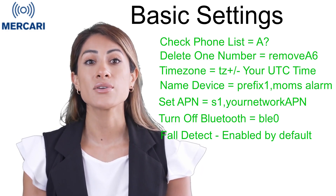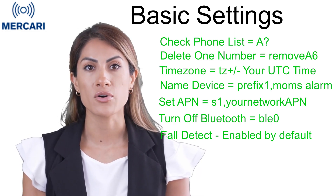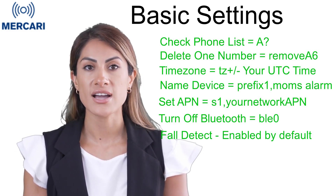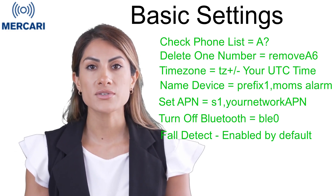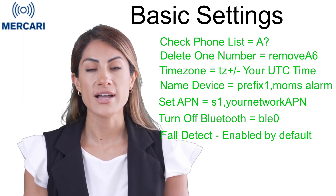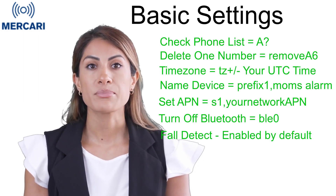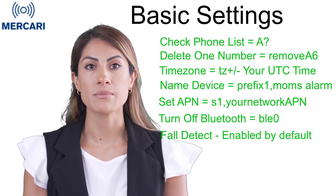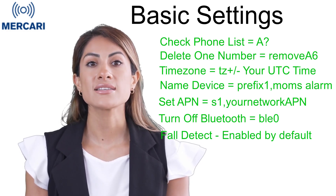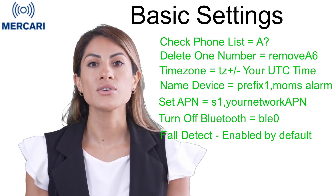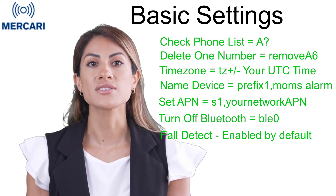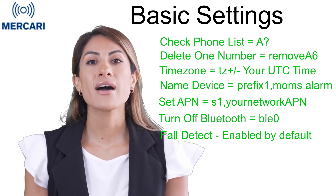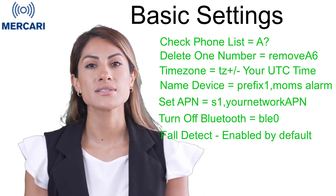So, for instance, if you wanted to change the A5 number without changing the rest of your list, you would send an updated A5 code to the device and it will overwrite the existing number. If you wanted to remove any of the programmed numbers — let's use A6 as an example — you can send the code REMOVEA6 to the device, and it will delete that number while leaving the other numbers in their priority sequence.